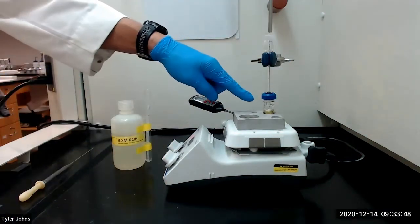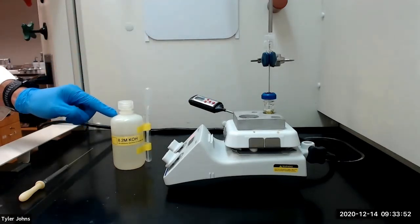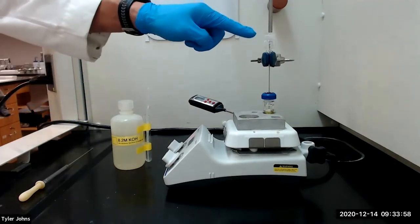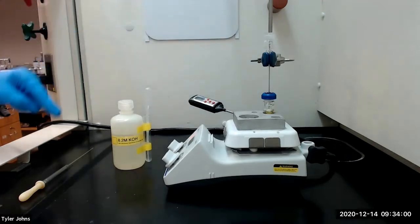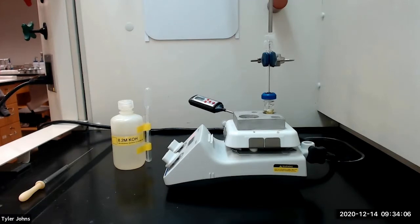After the benzyl has completely dissolved, we will next add 0.25 milliliters of 8.2 molar aqueous potassium hydroxide solution dropwise down through the air condenser using a nine inch pasture pipette. We will then gently boil the mixture while stirring for 15 minutes.